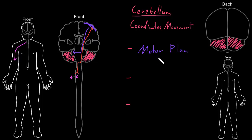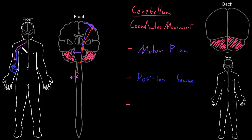Now that the cerebellum is aware of what the motor plan is, it wants to know how the movement is actually going, so it receives position sense information — and this is position sense information that isn't reaching consciousness, we're not aware of it, it's just going to the cerebellum. There are receptors involved in position sense, like the muscle spindles that sense stretch of skeletal muscles out in the body, and then somatosensory neurons bring that information back into the spinal cord. From there, tracks carry that information up into the brain stem and then into the cerebellum, so it can compare the motor plan to the movement actually occurring and see if corrections are necessary to make it smoother and more accurate.